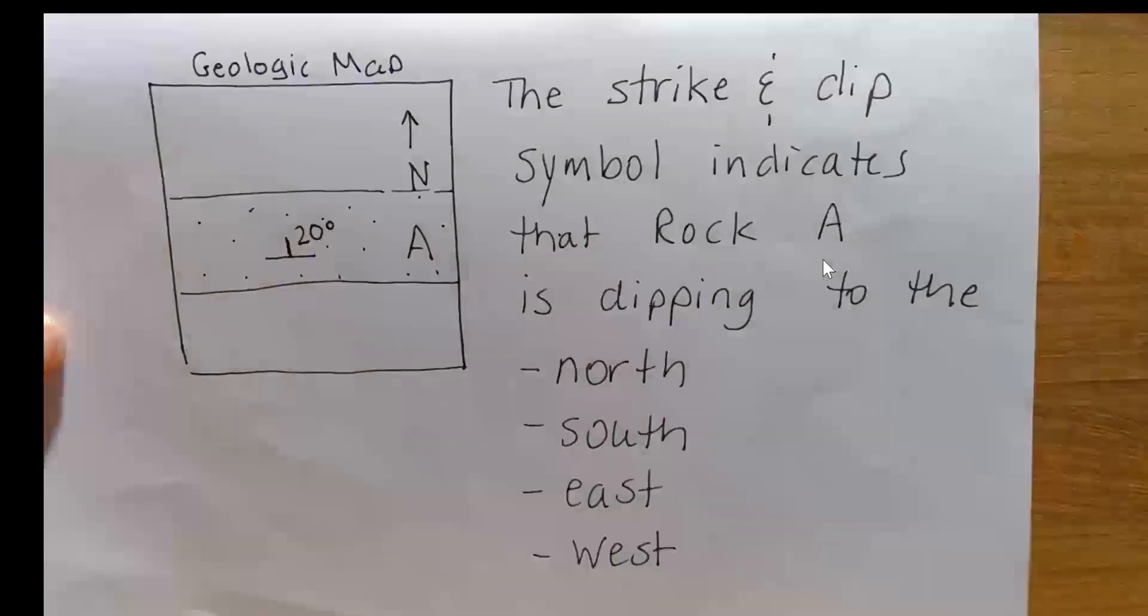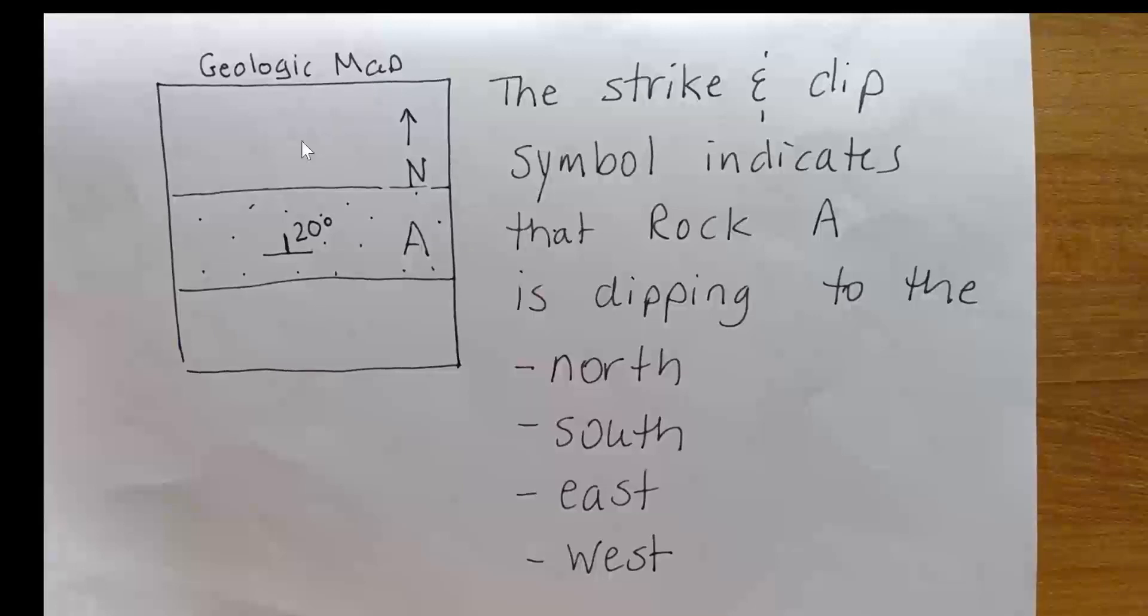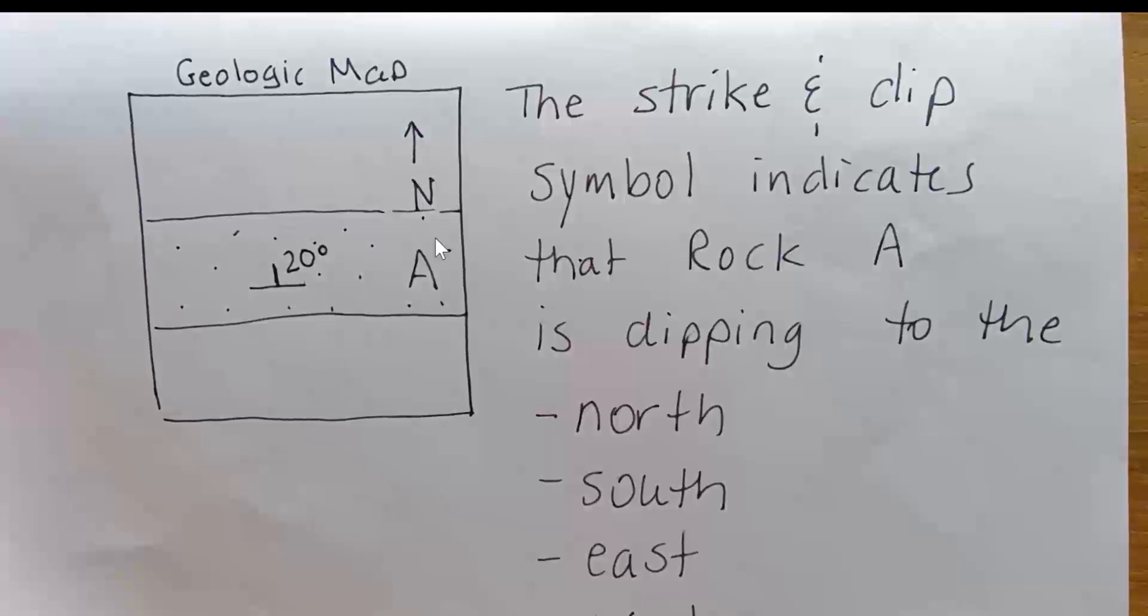Let me see if I can find a related question. Probably even more important and useful is to understand how to read a strike and dip symbol on a geologic map. So here you have rock unit A. It's got a strike and dip symbol on it. And here's the north arrow.